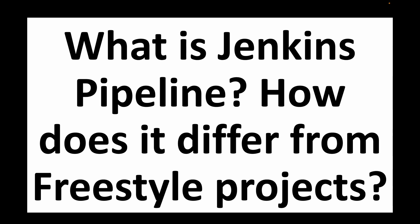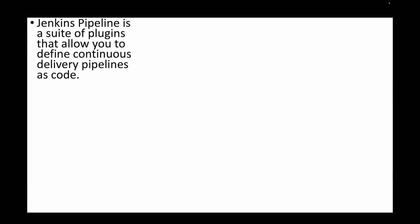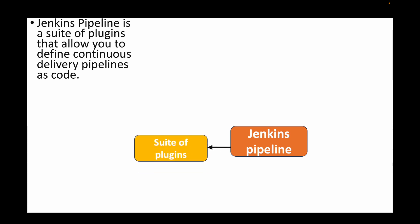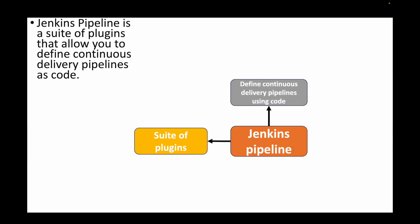The first question is: what is Jenkins pipeline and how does it differ from the freestyle project? When we talk about Jenkins pipeline, we can either create a pipeline as code, or we can make use of freestyle projects wherein we create multiple jobs to form a chain. Jenkins pipeline is essentially a suite of plugins that allows us to define our continuous delivery pipelines using code.